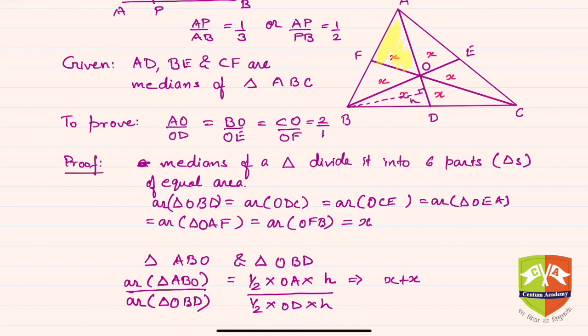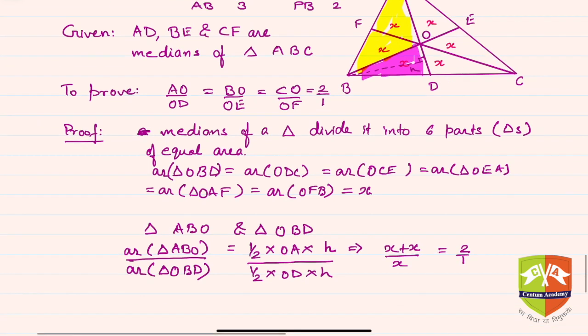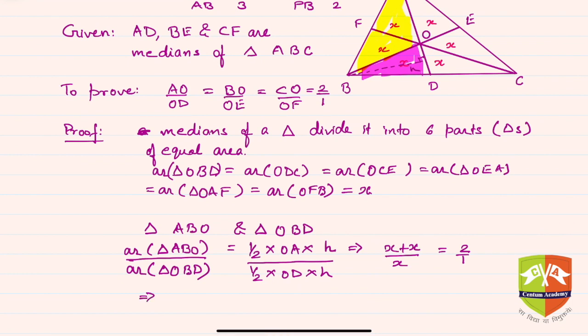And what is OBD? OBD is this much. Hence clearly I can say this is (x+x)/x and hence it is 2/1. So what do we infer? We infer that OA/OD is equal to 2/1.